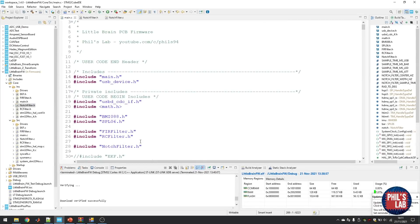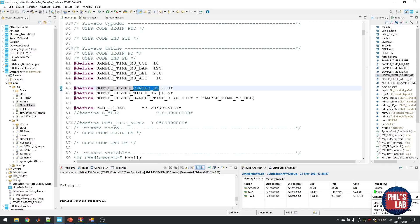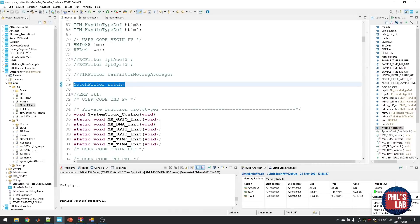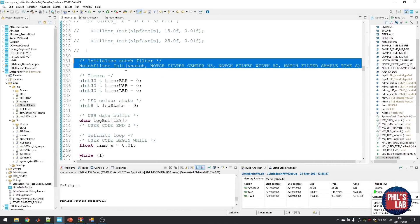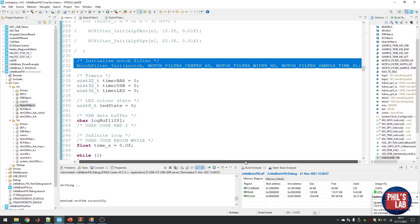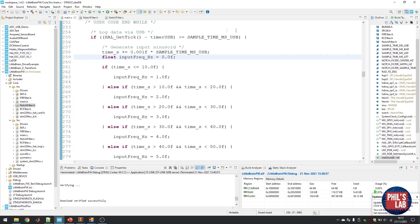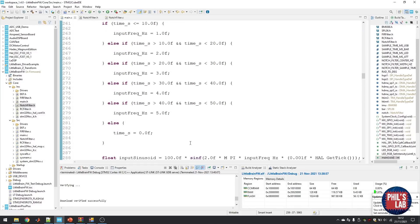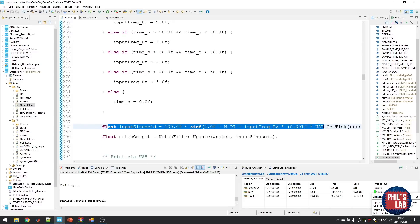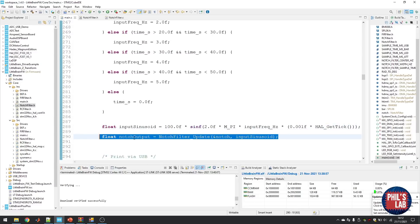In the main.c function of this LittleBrain board, I've then included the notch filter header file. I've made some definitions of the filter center in hertz, the width of the notch, as well as the sample time. Then I need to define my notch filter struct and then of course initialize my notch filter, passing the struct and the relevant design parameters. At a fixed sampling rate, in this case every 10 milliseconds, I will generate a fake input to my filter, which is just a sinusoid. This lets us test different frequencies and see how the filter responds to those frequencies. So we go from one to five hertz every 10 seconds and then wrap around. Then I compute my input sinusoid and input that into my notch filter and get the output.